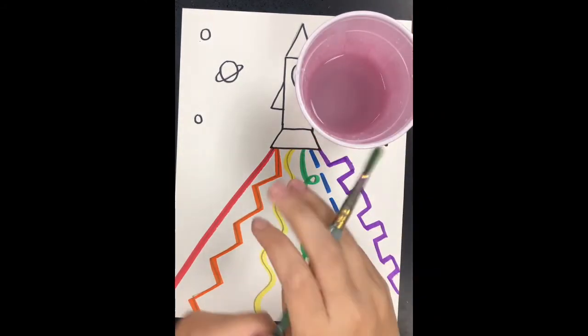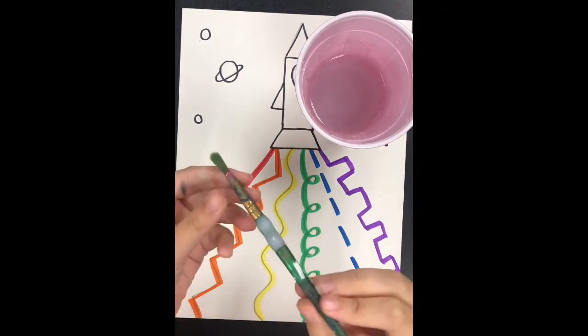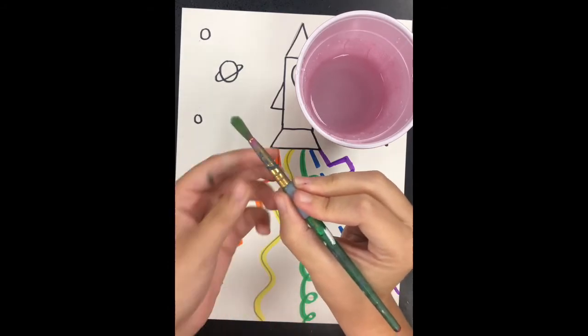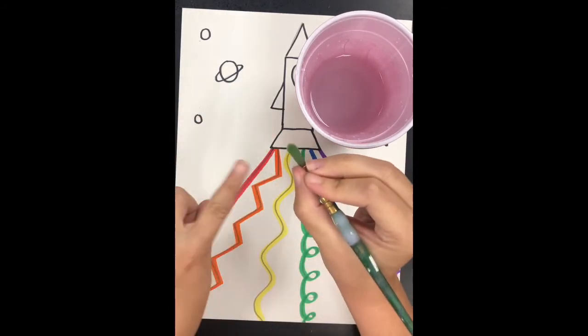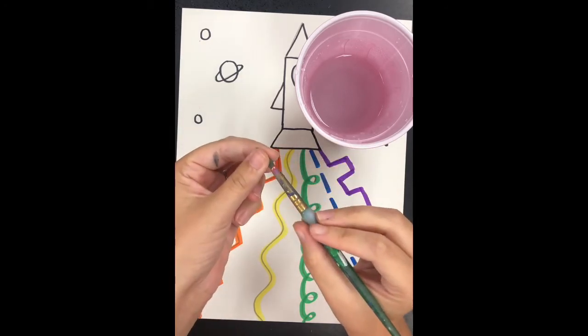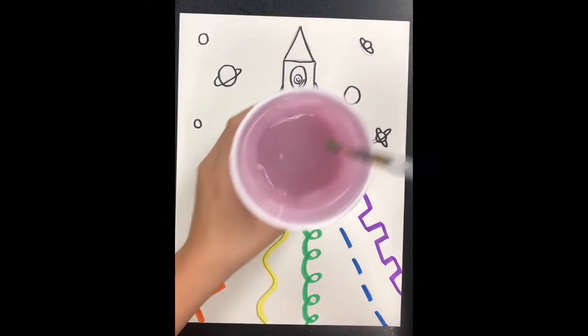We're going to trace again, but this time we're going to use a paintbrush. The best place to hold the paintbrush is on the grip. Not super far down on the handle, and not super close to the bristles at the top. We want to be right on the grip in the middle of your paintbrush.